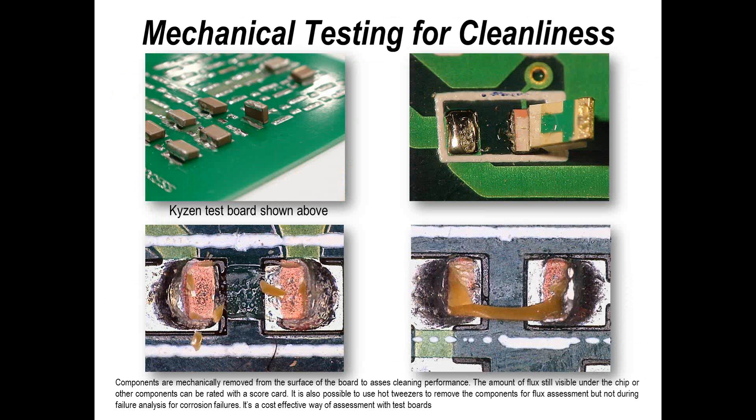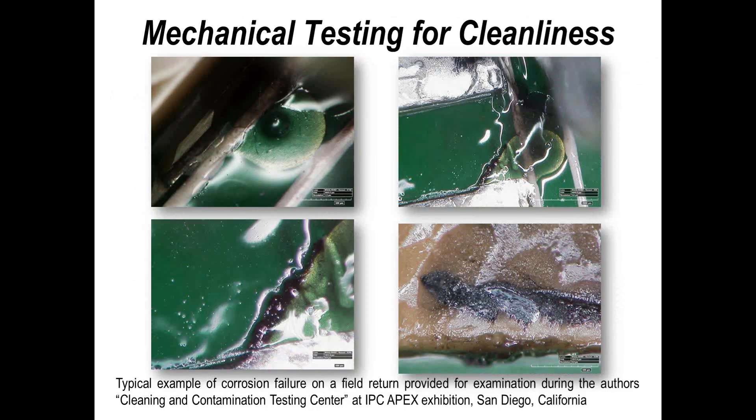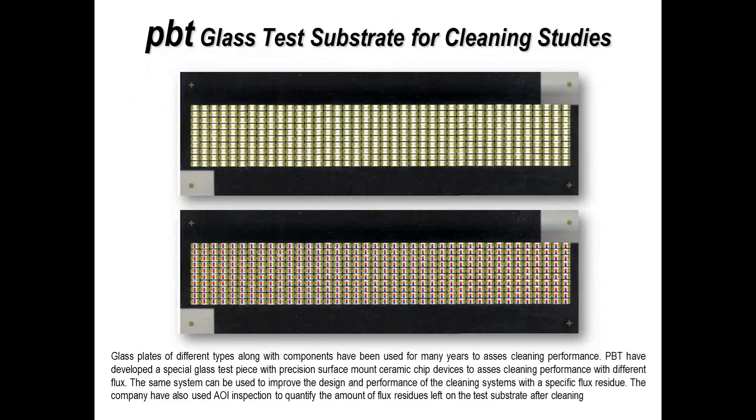Another example: here I've taken components off after testing and evaluation, and you can see a nice example of some conductive residue left behind underneath the package. This was actually a sample brought for me to evaluate at the cleaning and contamination testing center I ran at Apex in California. It's a good example of a real failure — clearly the residues underneath the component had impacted on the reliability of that particular circuit board.